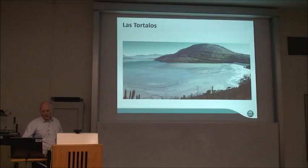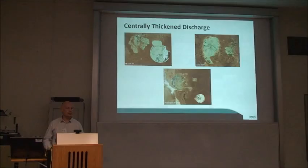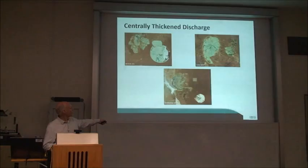This is another type of TSF — essentially thickened discharge where thickening isn't done centrally but the discharge is. Previously we talked about perimeter discharge; in this case we have a ramp with a pipe going to the centre and we then discharge radially outward, which produces nice little cones everywhere.